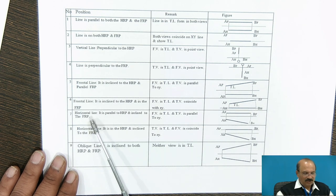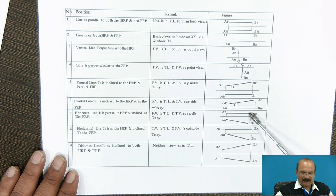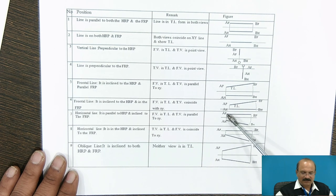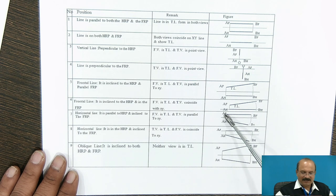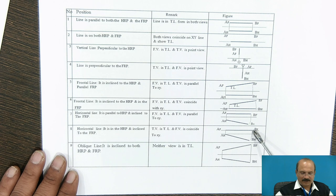Similarly, the horizontal line is parallel to the HRP and inclined with the FRP. Parallel to HRP means this line is a true length line, because the distances of both points are the same and the line joining those two points appears as a true length in the other view. This distance is made zero and the line comes on the horizontal reference plane only.